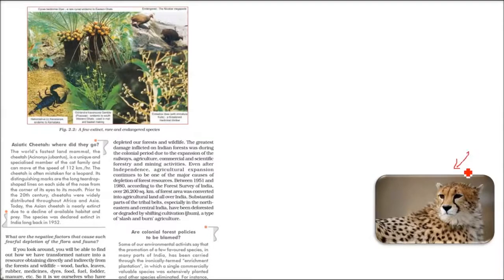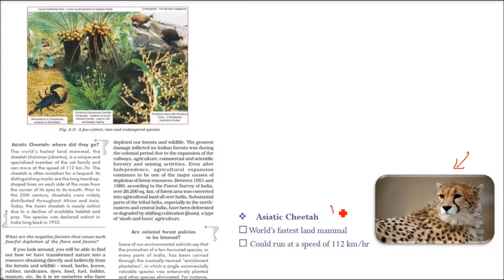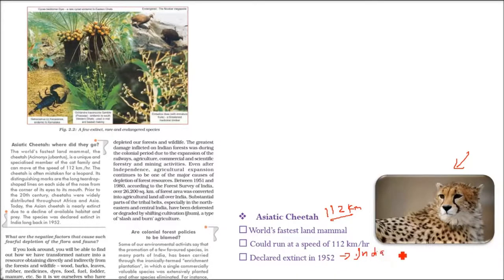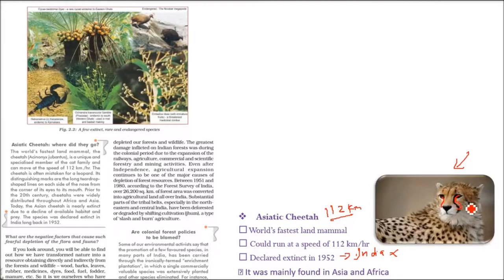The Asiatic cheetah deserves special attention — they are the world's fastest land mammal, able to run up to 112 kilometers per hour. They were declared extinct in India in 1952. They were mainly found in Asia and Africa. You can distinguish a cheetah from a leopard by the long teardrop-shaped lines on each side of its nose, running from the corner of its eye to its mouth. By the early 20th century they were almost gone, and in India they had already gone by 1952.